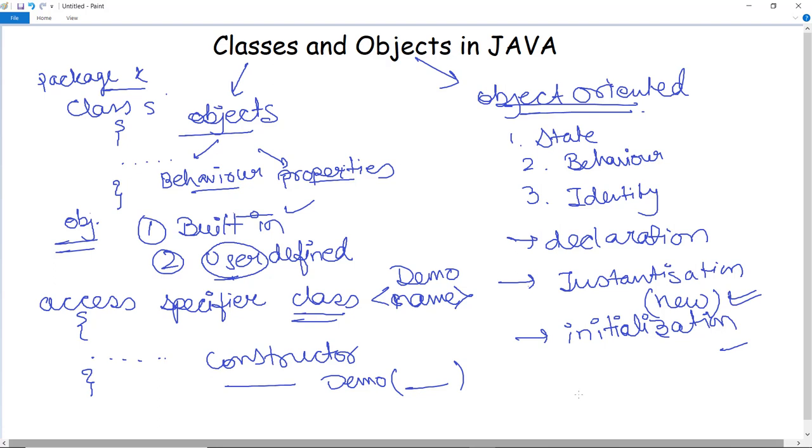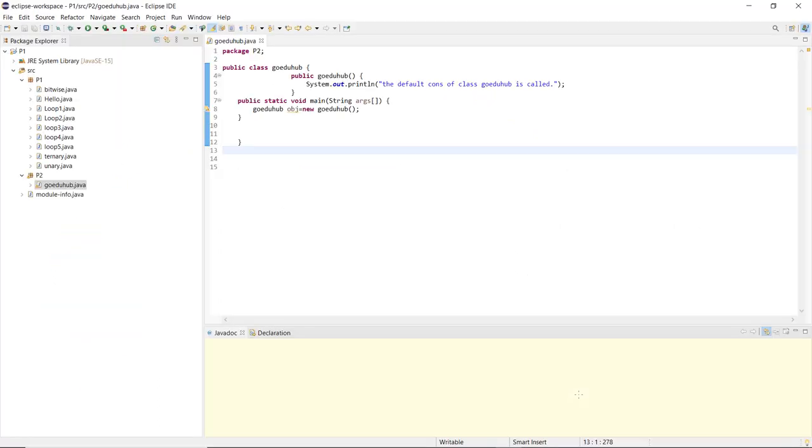Now, let us discuss a program and that we will execute in Eclipse IDE also. Now here you can see that I have written a code and firstly what I have done, I have initialized a class. For that we use the access specifier, the keyword class and the name of class. So the name of class is GoEduHub.